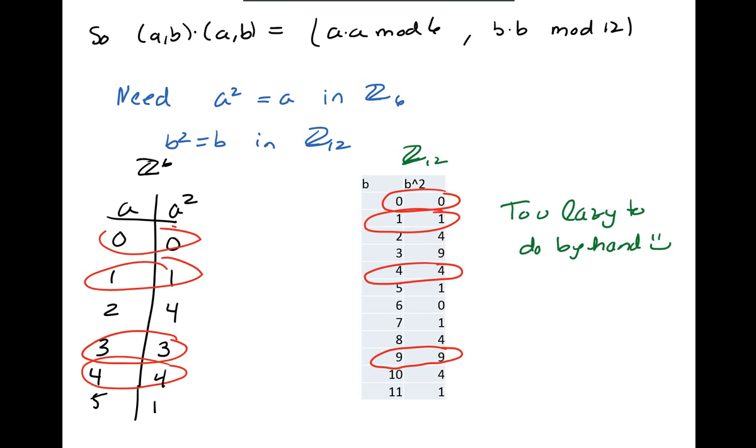Z12 I was a bit more lazy. I didn't want to do that by hand, so I went to Excel. Excel will do mod calculations for you. And I went through the 12 elements of Z12 and I just looked where the square element turned out to be the same in the first column and we get 0, 1, 4, and 9.